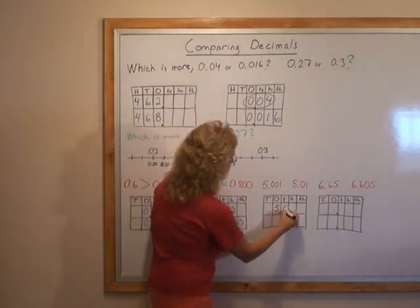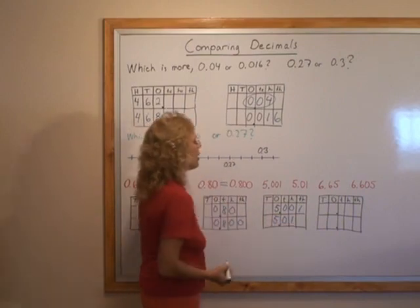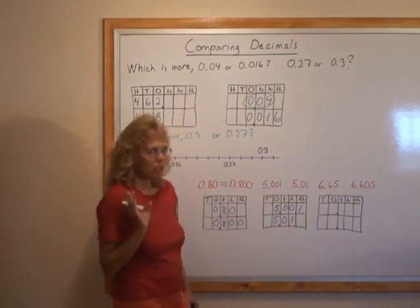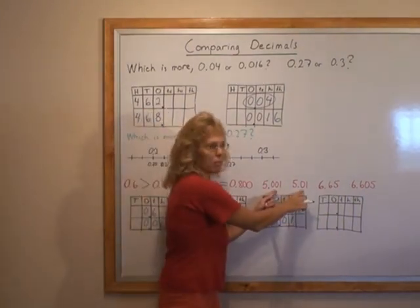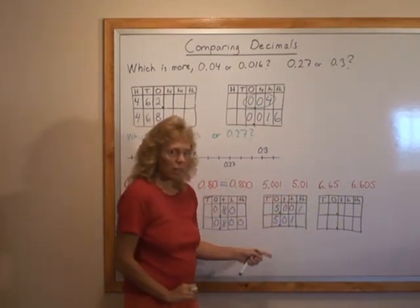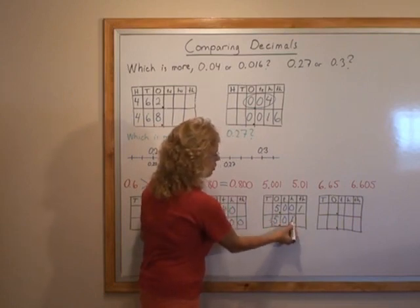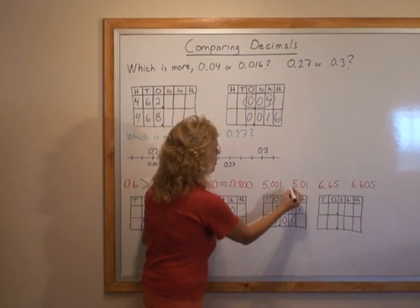I'll write 5.001 and 5.01. A child with a misconception, again, might think these are equal because it looks like 1 and 1. But using the place values, we clearly see that here, this number is bigger because it has one hundredth, whereas this one has none.